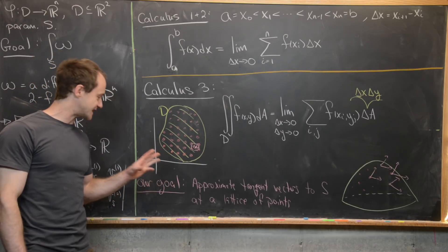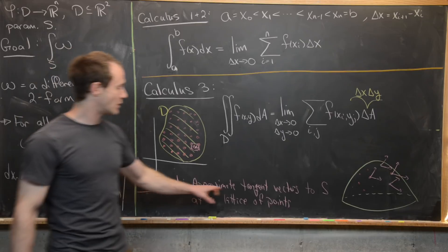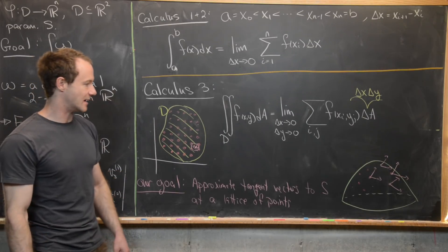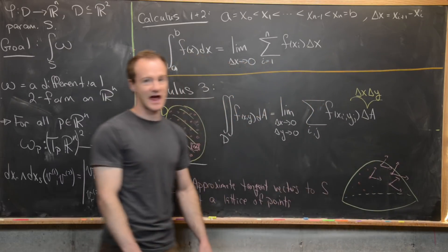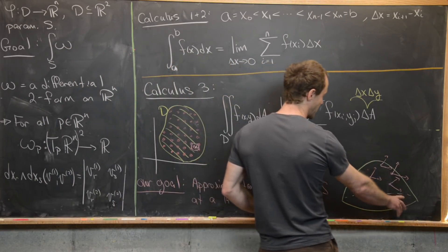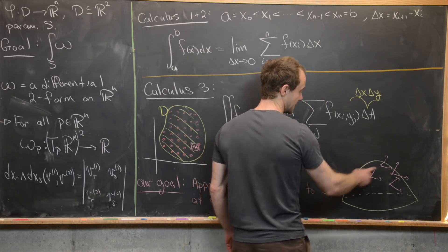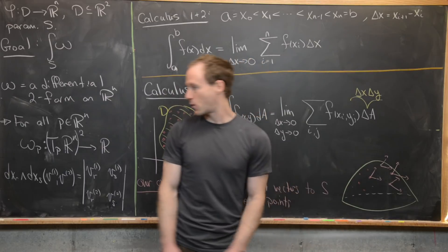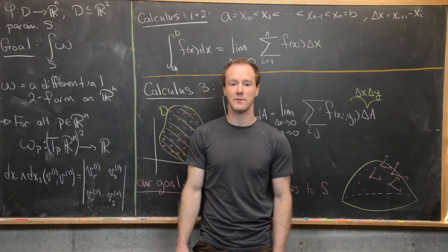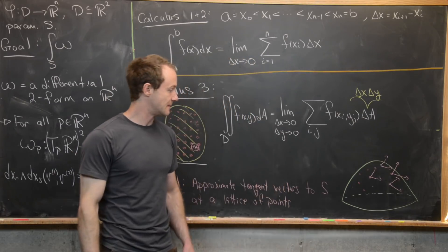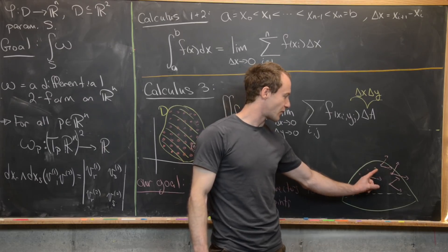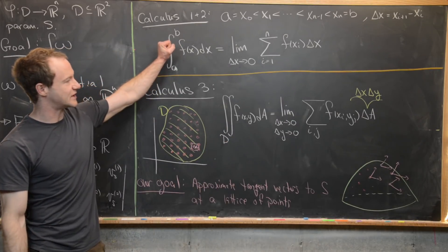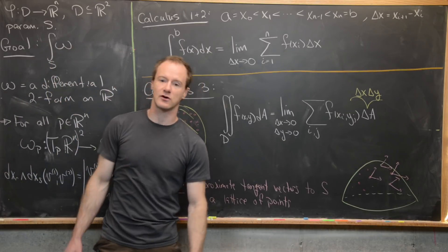Now we want to do the same thing for our differential two-form. We want to approximate tangent vectors to S at a lattice of points inside S and then add all of that up. Think of this cap as our surface S. We put a lattice of points on this surface, which gives us the first stage of evaluation of our differential two-form. At each of these points we can evaluate our two-form down to a two-form, which then accepts two vectors — the approximate tangent vectors at each point.